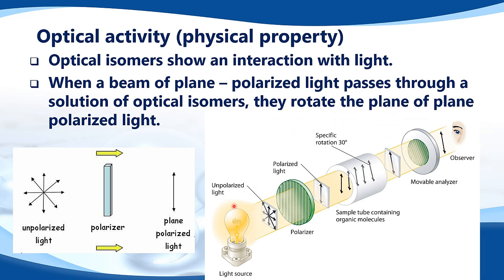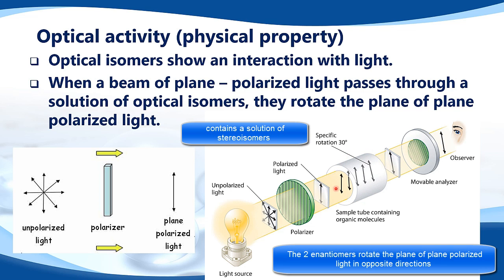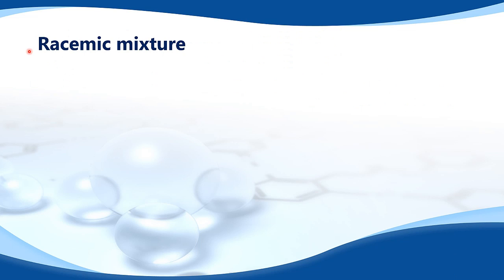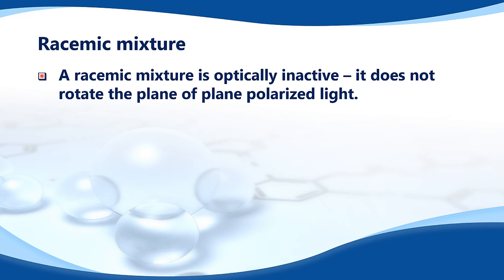Here we have our light source which emits unpolarized light. It passes through the polarizer, which only allows the vertical component through. Here we have our polarimeter, which contains our stereoisomers, and as you can see, the plane of the plane polarized light is rotated.